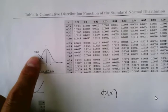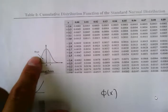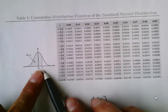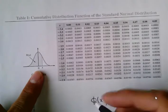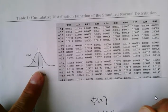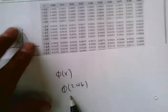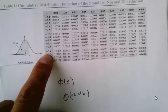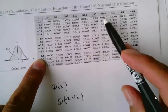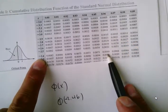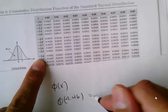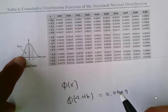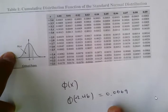From negative infinity up to x, whatever that area is, we can find it in this table. For example, if x is negative 0.246, we look for negative 2.4 in the table and then look under column 6, and we get the answer 0.0069, which means the area to the left will be this value.